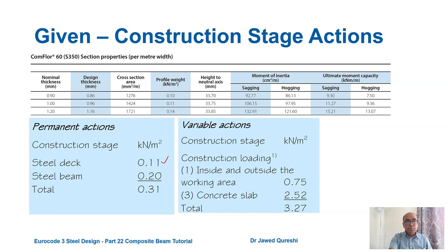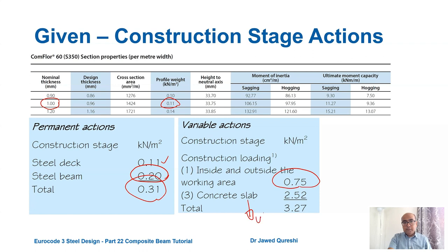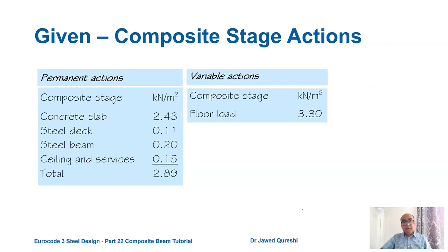At construction stage, self-weight of the deck is 0.11 kN/m² (from manufacturer's section properties for 1 mm thick deck), assumed steel beam self-weight is 0.2 kN/m², giving total permanent action of 0.31 kN/m². Variable actions at construction stage include construction loading 0.75 kN/m² plus wet concrete weight of 2.52 kN/m², giving variable action qk = 3.27 kN/m².